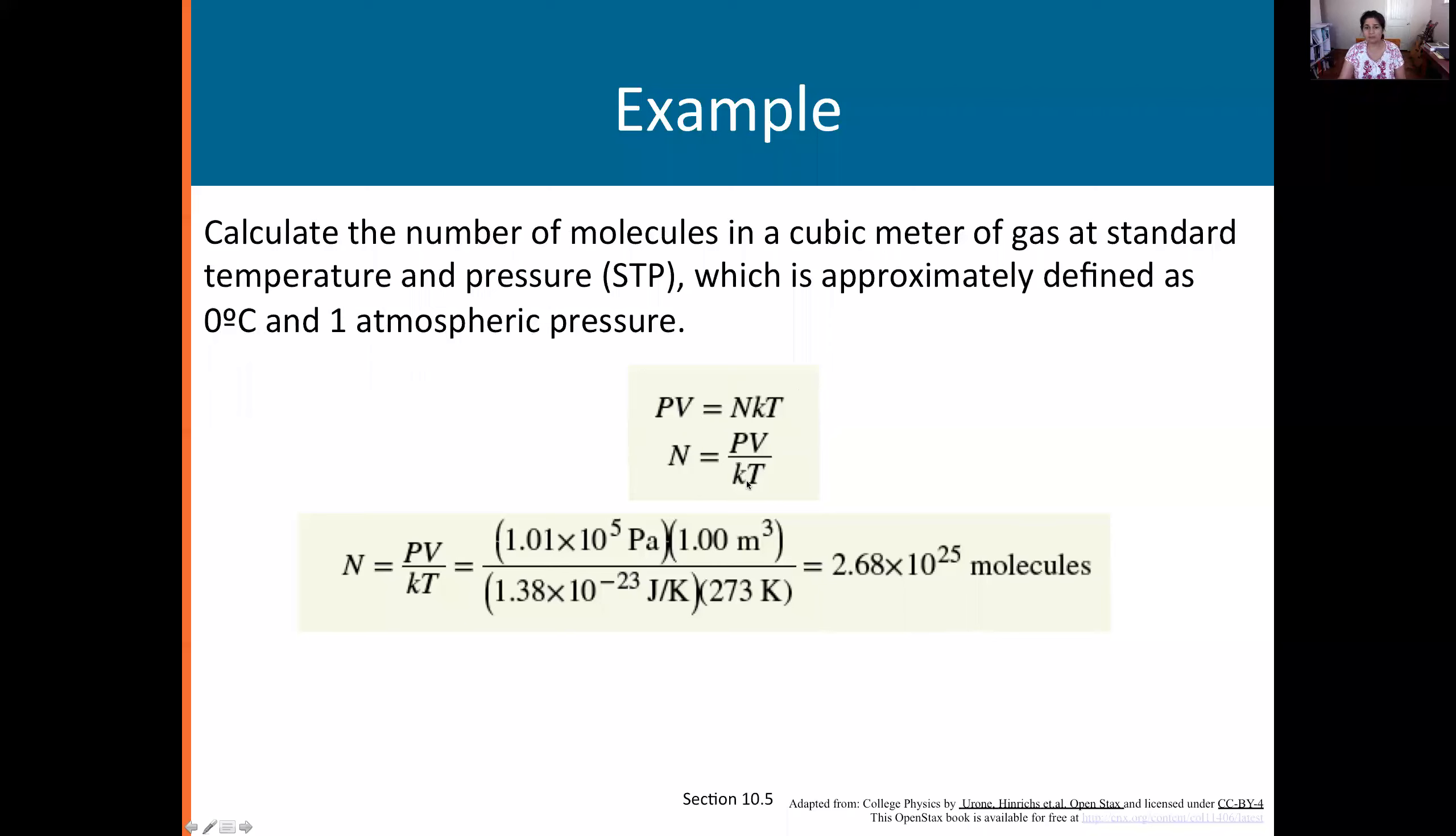N equals PV over kBT. KB is same as K, lowercase K here. Pressure, 1 atmosphere is so many Pascals. Volume is 1 cubic meter. They told you that. Take the same standard value of KB and temperature. Temperature is 0 degree Celsius convert to Kelvin. That's 273. You can write the 0.15 if you like or not. Sort this and you get 2.68 times 10 to the power 25 molecules.